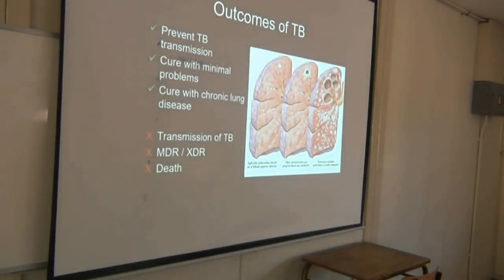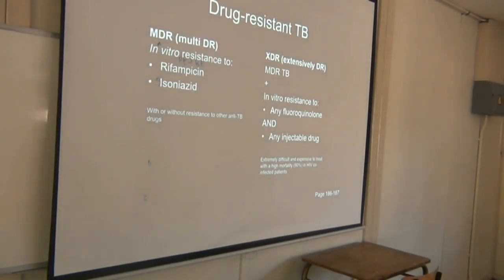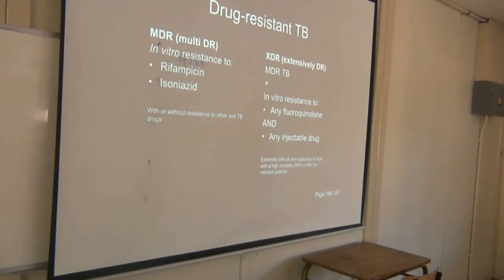Outcomes of TB treatment can include: preventing transmission, curing TB with minimal problems, or curing TB with some lung function impairment. Treatment of drug-resistant TB is currently in flux. There was an interim guideline for 2018 released by the Department of Health, and they are waiting for the WHO to update their guidelines, after which we will get official new MDR and XDR treatment guidelines.